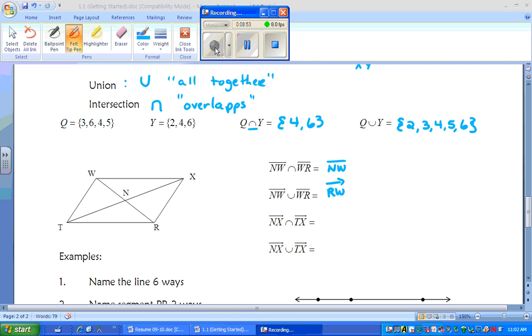The third example says ray NX. So we'll highlight ray N to X intersecting ray TX. Well, where do these two intersect or overlap? They both start overlapping at N and go beyond. So this would be ray NX would be the overlapping.